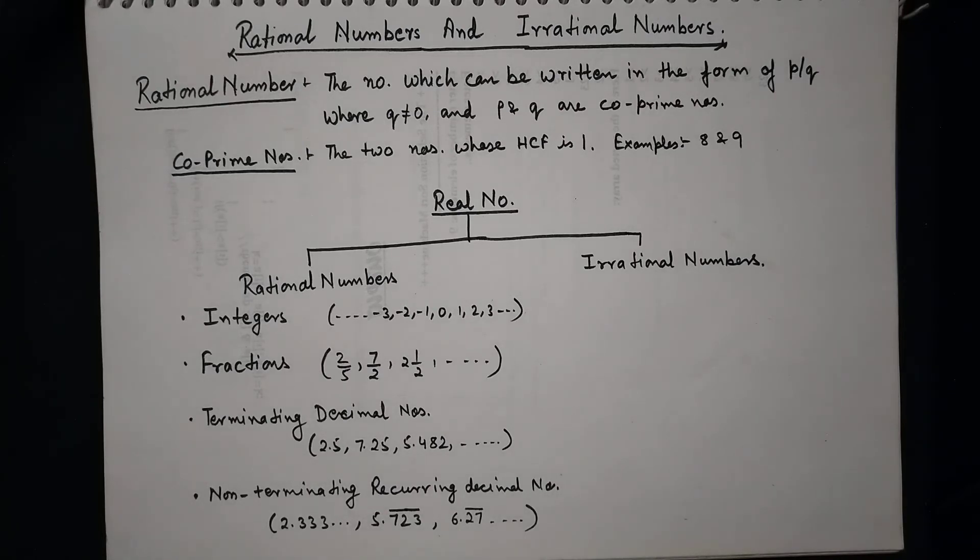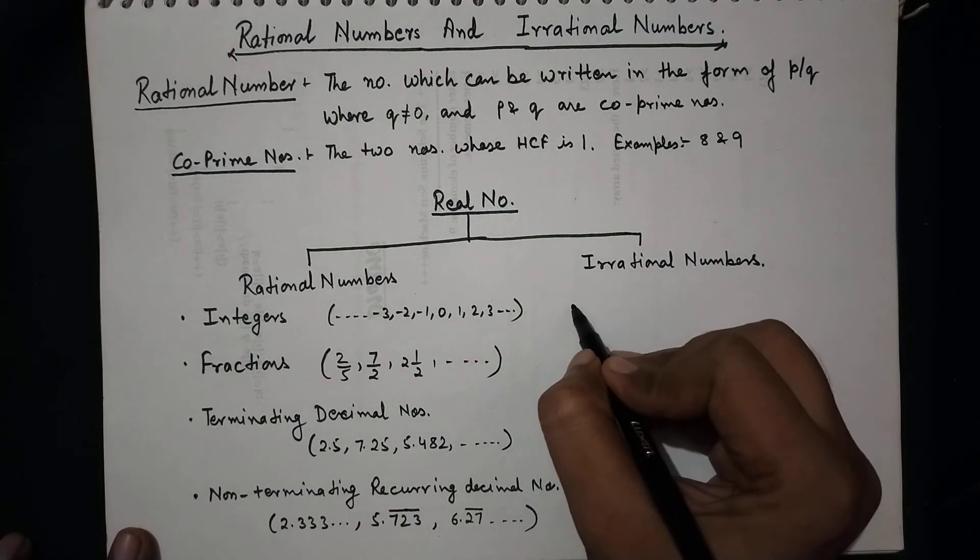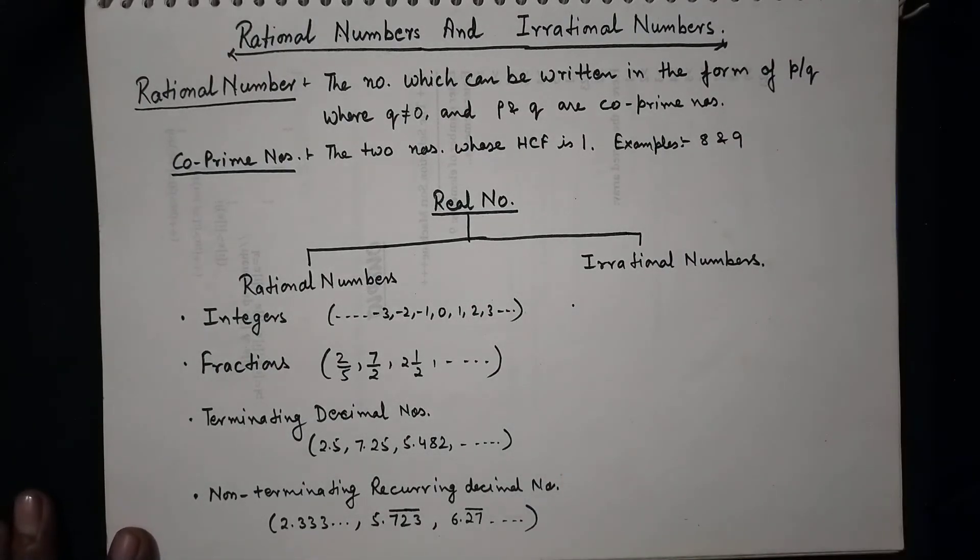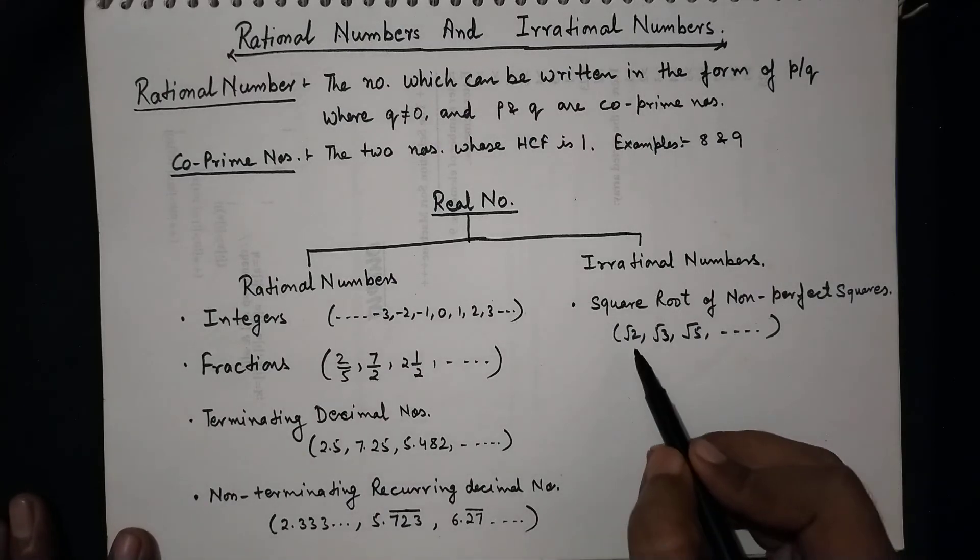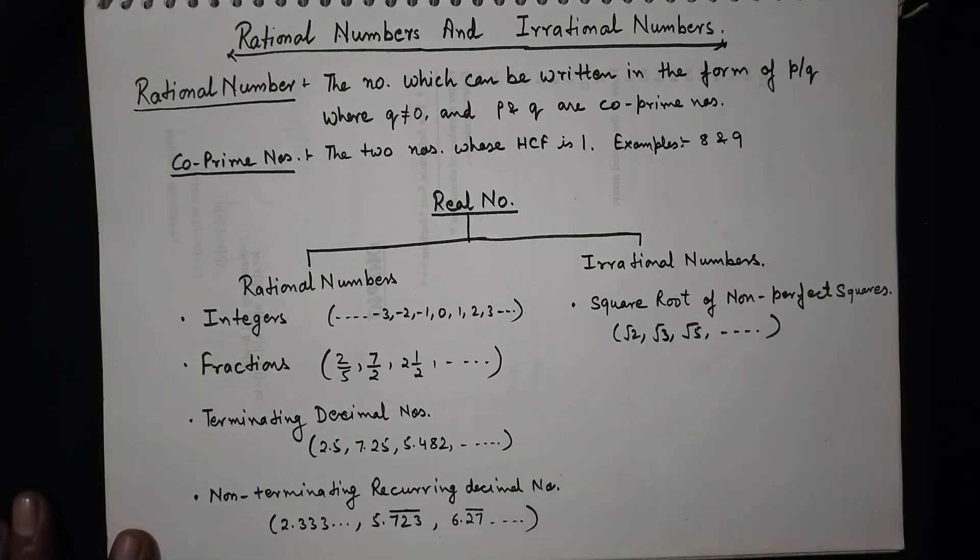Now we go for the irrational numbers. In this one, very first of all, we take the square root of non-perfect squares. Square root of non-perfect squares includes the numbers such as root 2, root 3, root 5, and so on.